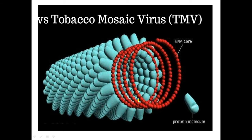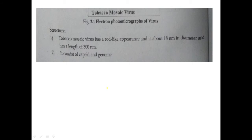Here is a picture from electron microscopy. This is a coiled structure — this is the RNA core, and this is a particular type of protein. Let us see this in detail about the structure.